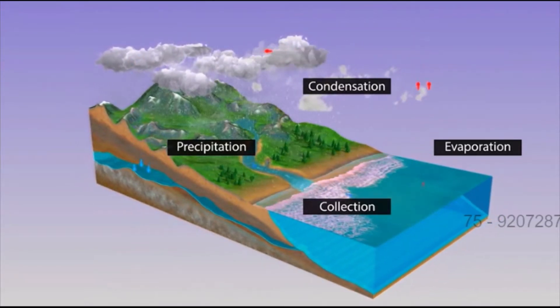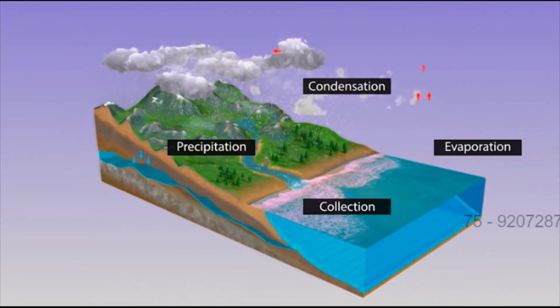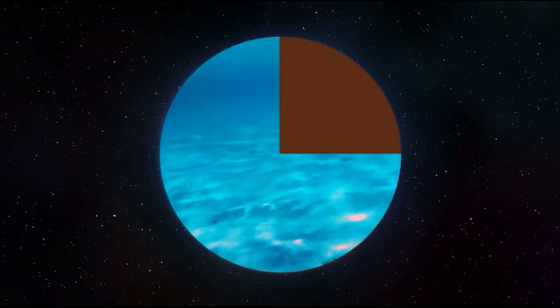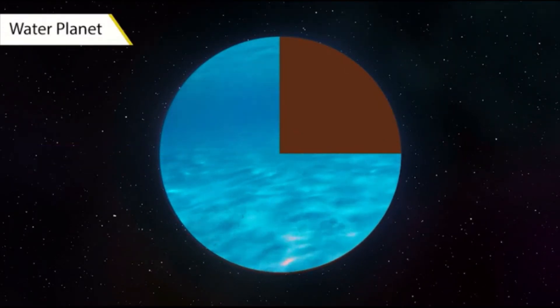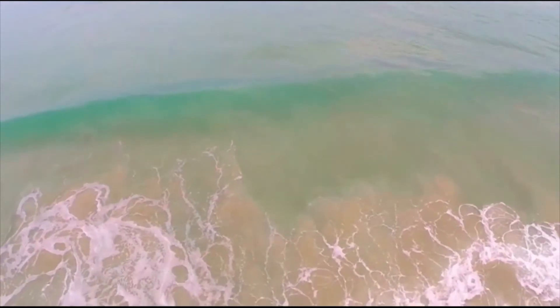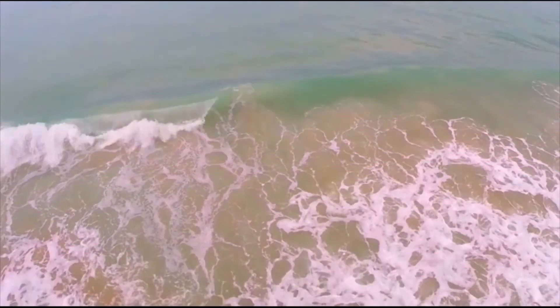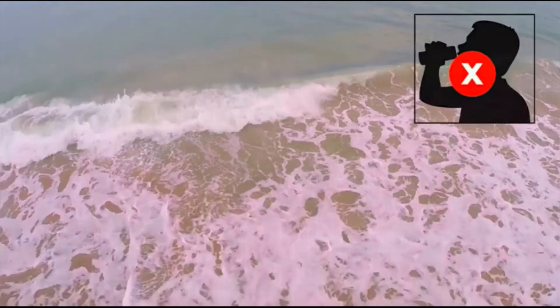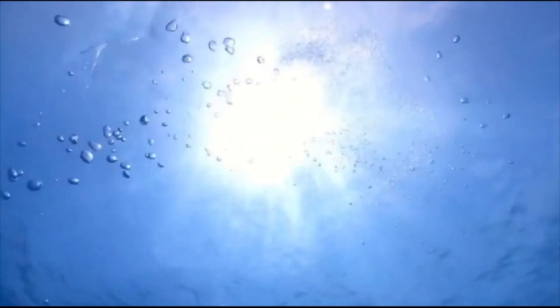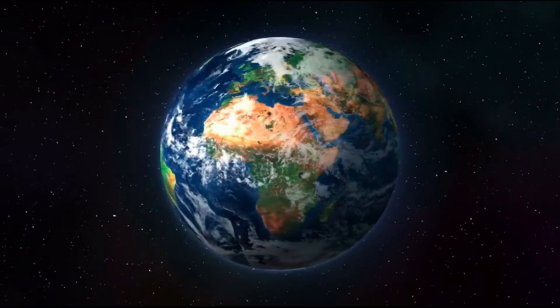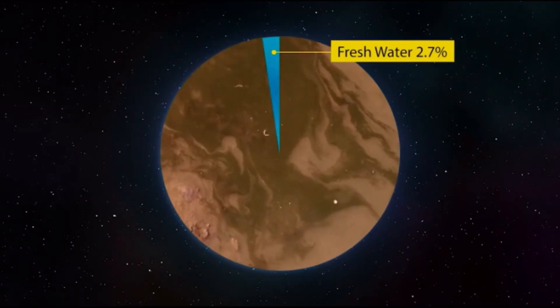Water keeps getting renewed through the cycle, and is therefore considered a renewable natural resource. Three-fourths of the earth's surface is covered by water, so it is aptly called the water planet. Of this water, two-thirds is in the oceans. However, ocean water is salty and not suitable for drinking. Only fresh water is used for drinking, and fresh water makes up only 2.7 percent of the total water available on the earth.